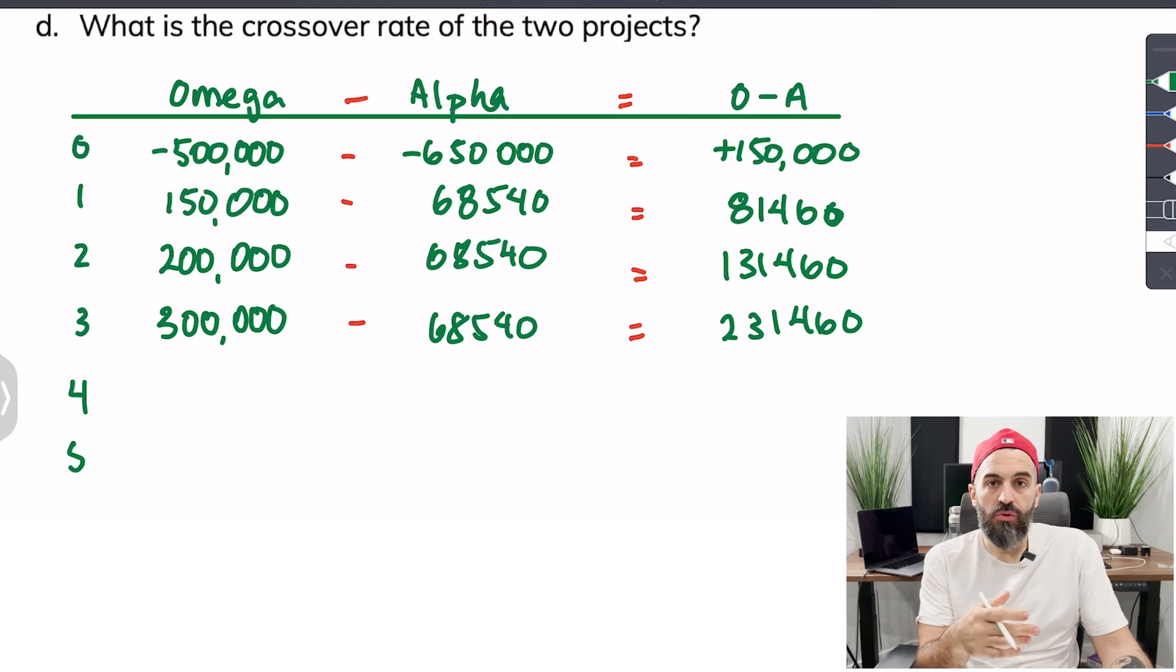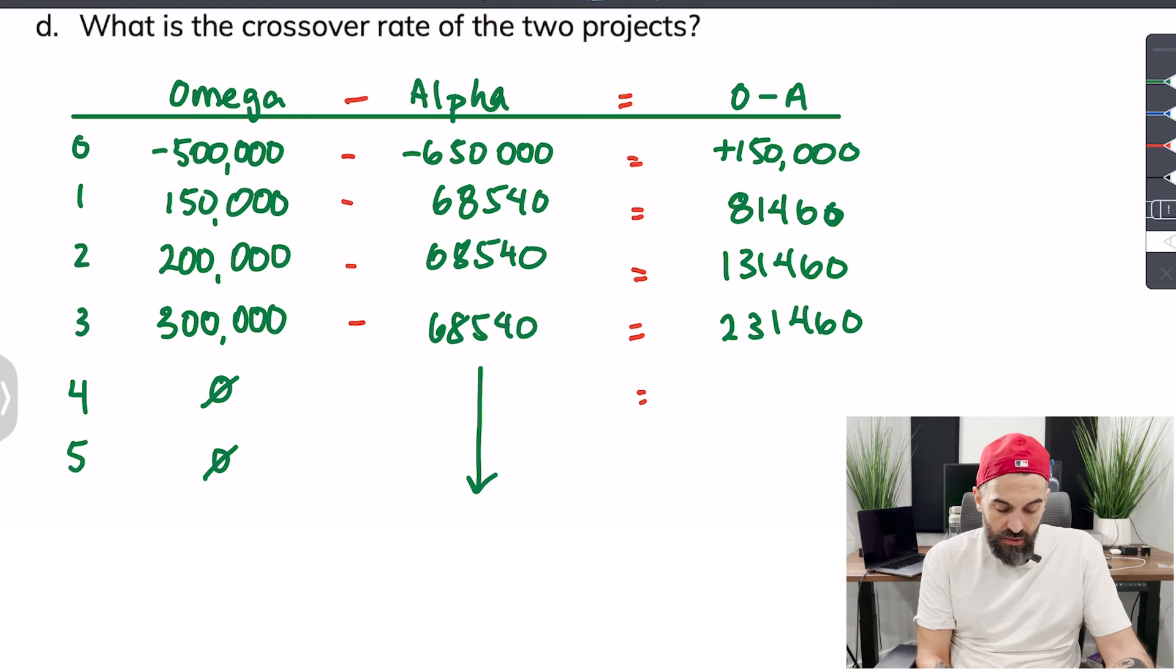Now at this point Omega will run out of cash flows so what do we do, just set it to zero and continue this process. You don't need to show it three more times, you really only need to show it once more for yourself to see that that'll be the remaining cash flow to infinity. So Omega would have zero from this point on to infinity but Alpha would continue to have its payments of $68,540 to infinity so the difference now would be negative $68,540 to infinity.